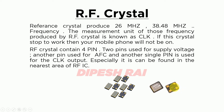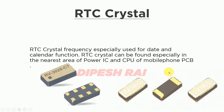As you can see in the images, the RF crystal has four pins — two for supply voltage, one for AFC, and one for the CLK signal. You can check those pins using a multimeter. If you don't know how to use a multimeter, check my previous video; I'll also provide the link in the video description.